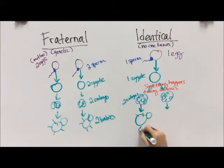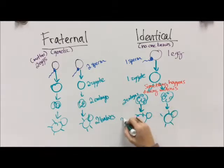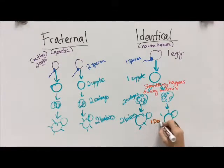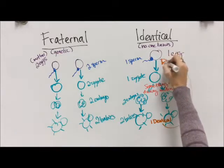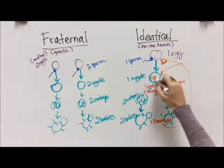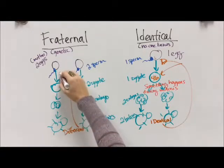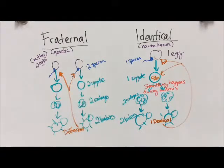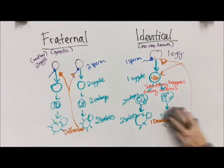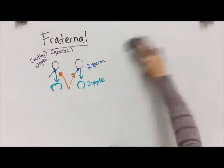Those two embryos go on to form two babies that have exactly the same DNA. They are genetically identical to each other and occupied the same space at the same time, whereas fraternal twins are different from each other because they're two different sperm fertilized by two different eggs.